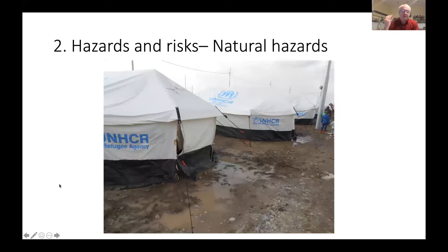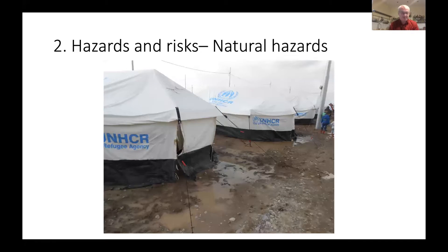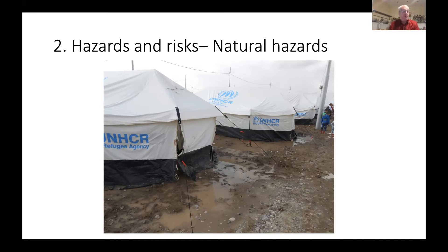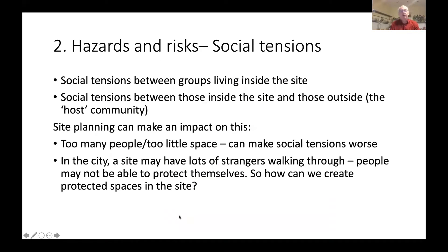Natural disasters — this photo illustrates flooding as one natural hazard. In urban areas we can also have high winds, including things falling off buildings into the site. There might be a history of earthquakes — earthquakes might not affect tents, but they can affect buildings falling in if the site is too close to large buildings.